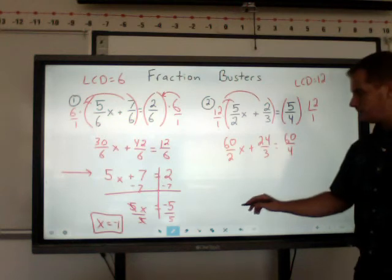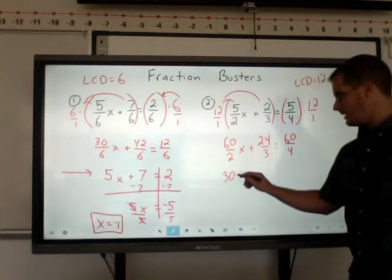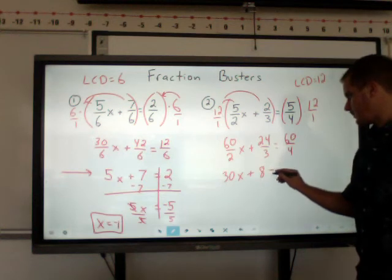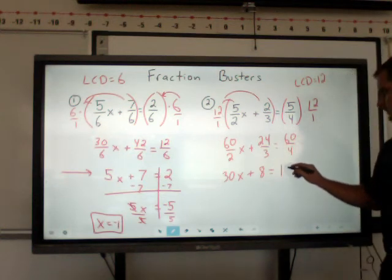So let's simplify this down. So you get 30x, plus 8, equals 15.